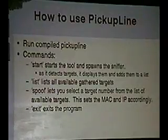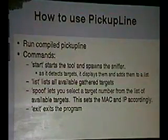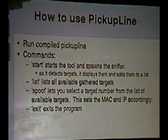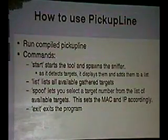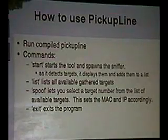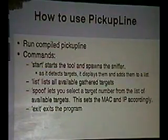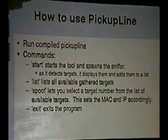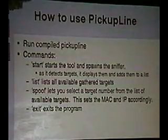There are some very basic commands for the Pickup Line program, which is what we named it. It's a command line program. When you start it, it gives you a user prompt, and then you type 'start' and it spawns off the three threads that are sniffing. You'll start seeing information coming in — it'll print it off as it goes. Once you've gathered some information, you can type 'list' to see all the targets that are available. Then once you think you have a target you want to use, you use the 'spoof' command to pick a target, copy all their information — the IP address and the MAC address — go through the gateway, and you're on the network. The 'exit' command will exit the program.